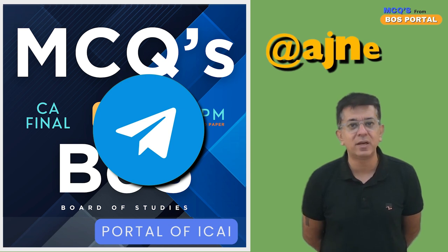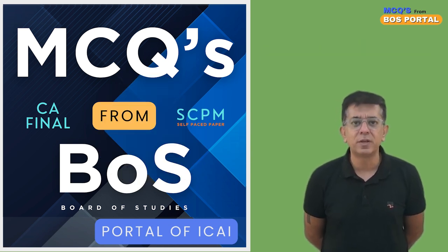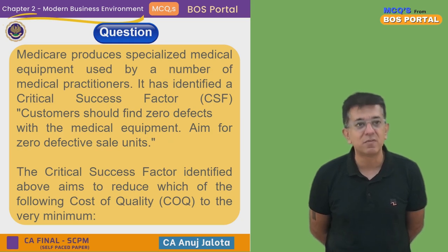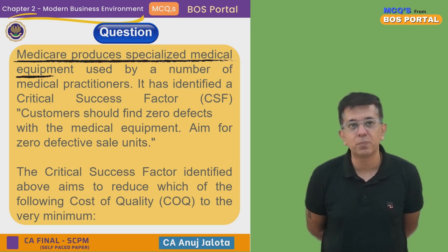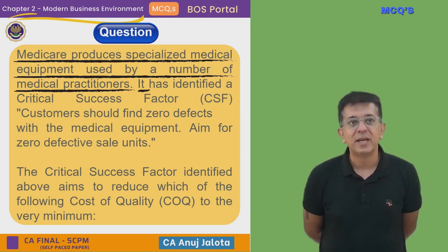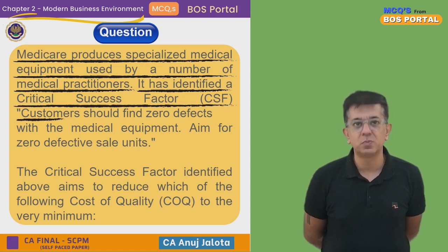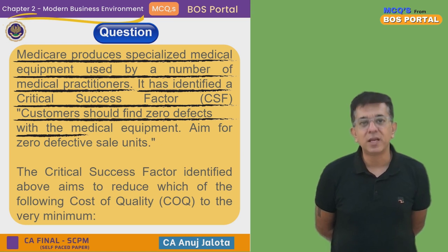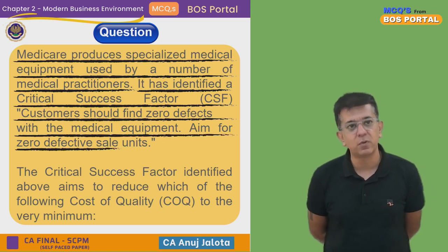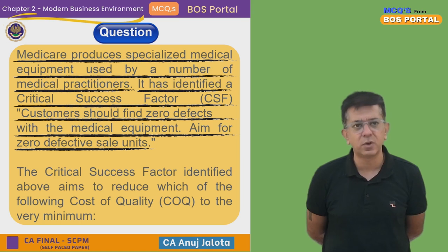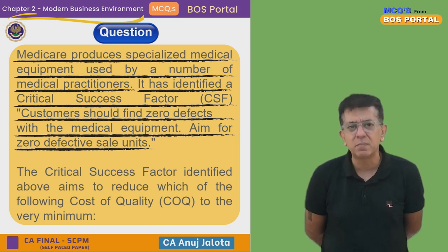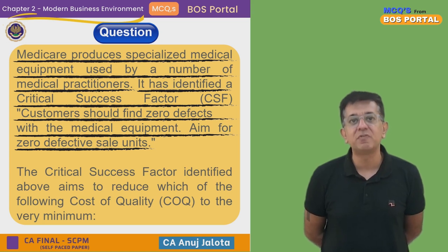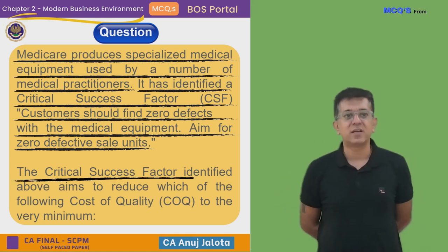On our Telegram ID at the rate AJ. Next, let's start off. We are on Chapter Number 2 — Modern Business Environment. The question for today is: Medicare produces specialized medical equipment used by a number of medical practitioners. It has identified a critical success factor: customers should find zero defects with the medical equipment — aim for zero defective units. Critical success factor means that is our goal — we should have zero defectives with the medical equipment that we manufacture.